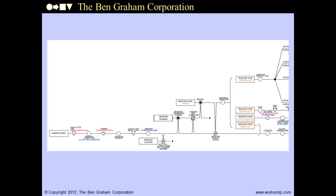Each document or item in a process is represented as its own horizontal line. Each line begins with a label that identifies the item. The actions and periods of non-activity that happen to a document are placed on that document's line in sequence. If you want to know what items are in a process, read the labels. If you want to know what happens to a particular document, read the symbols along that document line.